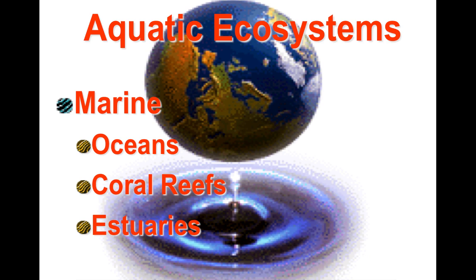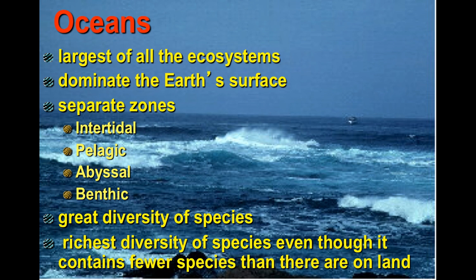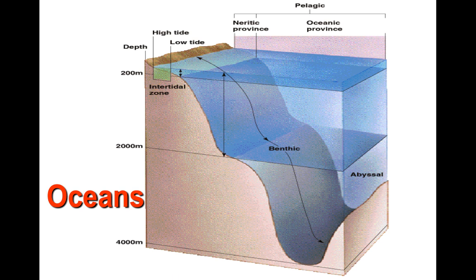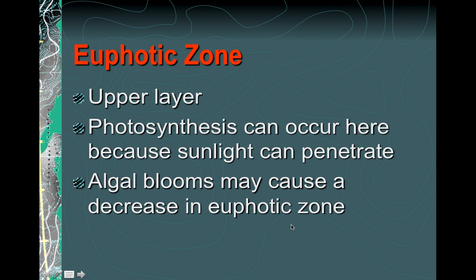Now let's focus on marine ecosystems — our oceans, coral reefs, estuaries, mangroves, and more. The marine ecosystem covers about 70% of Earth's surface and is predominantly saltwater. There are zones we'll look at: the intertidal, the pelagic, and the benthic zones. Here are some images showing those.